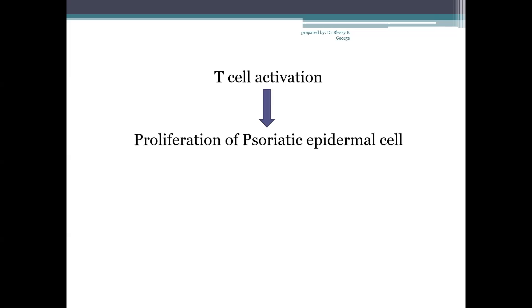Local keratinocytes and neutrophils are also induced to produce other cytokines. As a result of pathogenic T-cell production and activation, the psoriatic epidermal cells proliferate seven times faster than normal epidermal cells. This is the pathological change which happens during psoriasis.